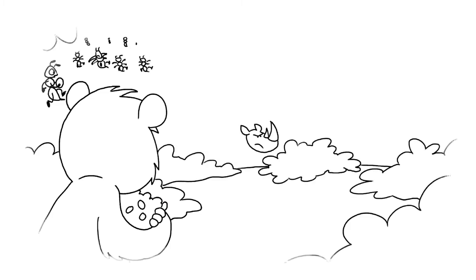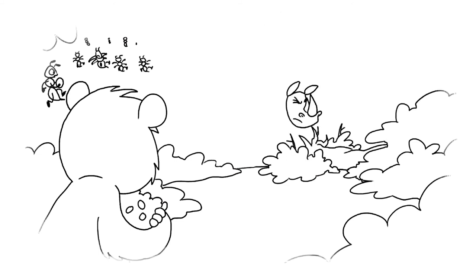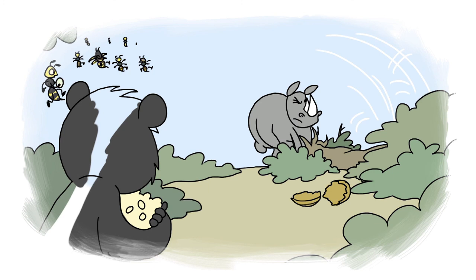At that moment, Rhino ran up and slammed into the tree with a mighty thud. The nest crashed into the ground. But it was empty. All the wasps had followed honey badger and little wasp to the fig tree.